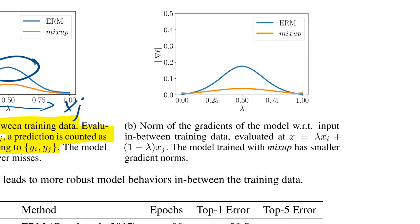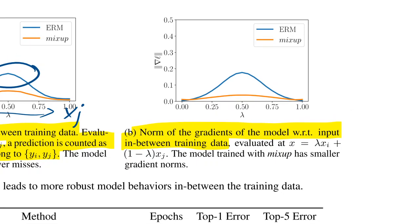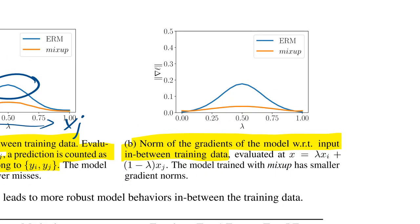Now, they also say that the gradient norm of the gradients of the model with respect to input in between training data, it happens the same thing. The norm of the gradients in the middle is also much, much lower. And this investigation, I find pretty cool.